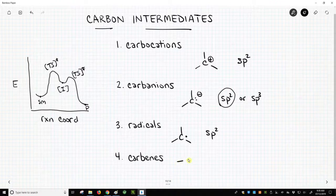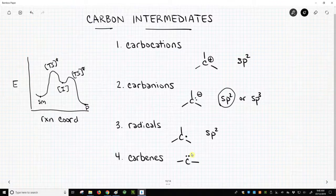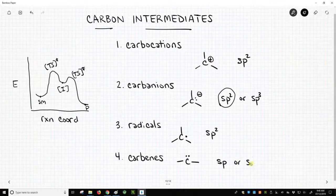And then carbenes are the last intermediate I'll mention. Carbenes are kind of odd things. They're a carbon with two bonds and a lone pair. These can be sp or sp2 hybridized.